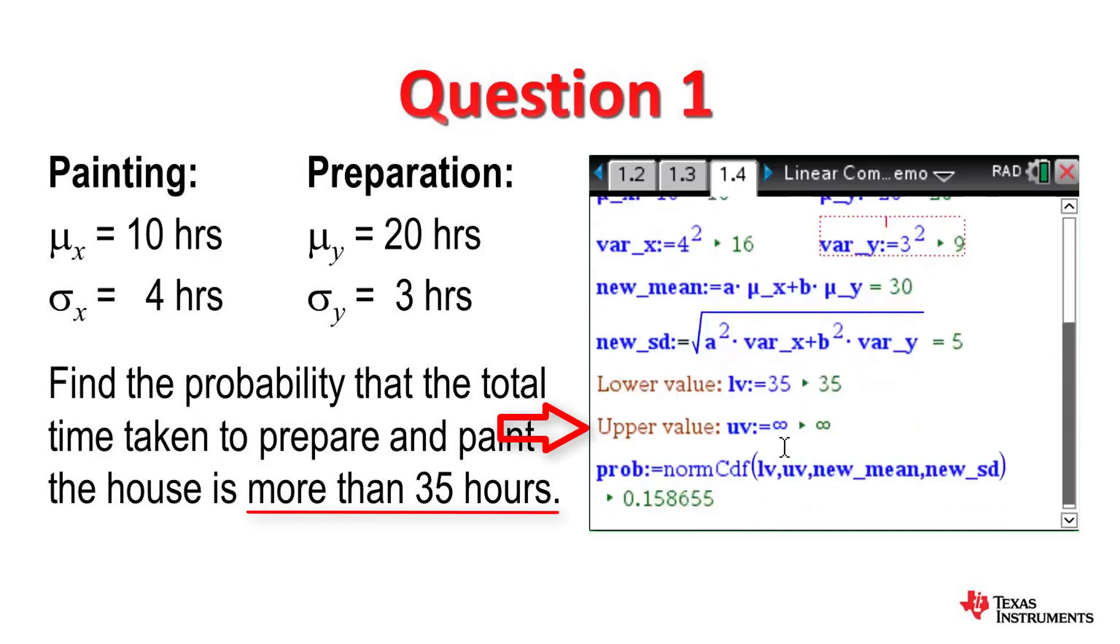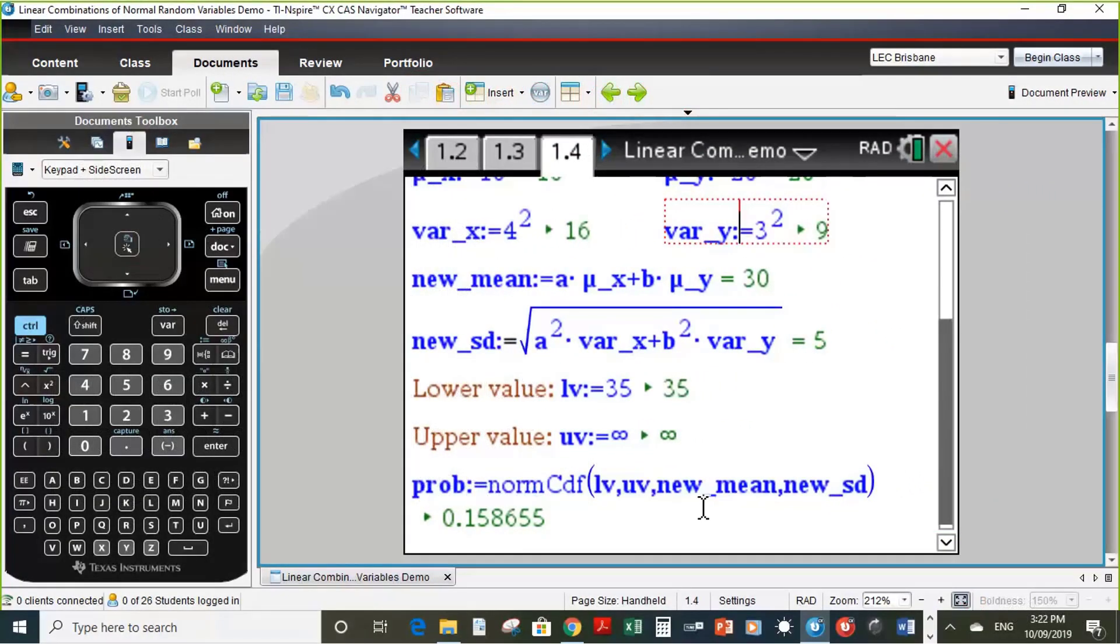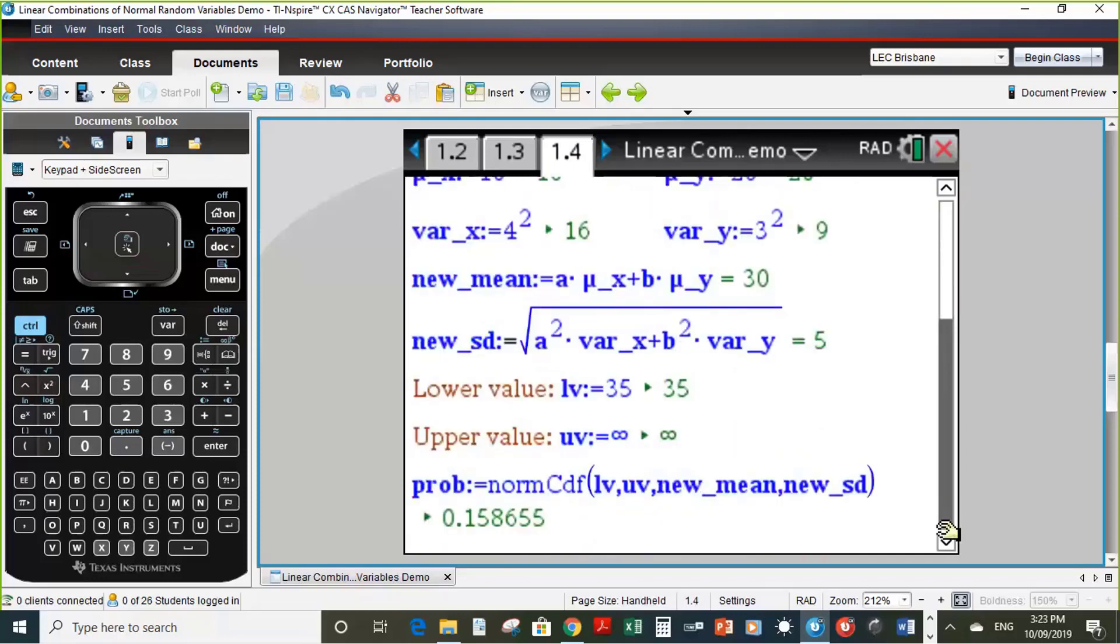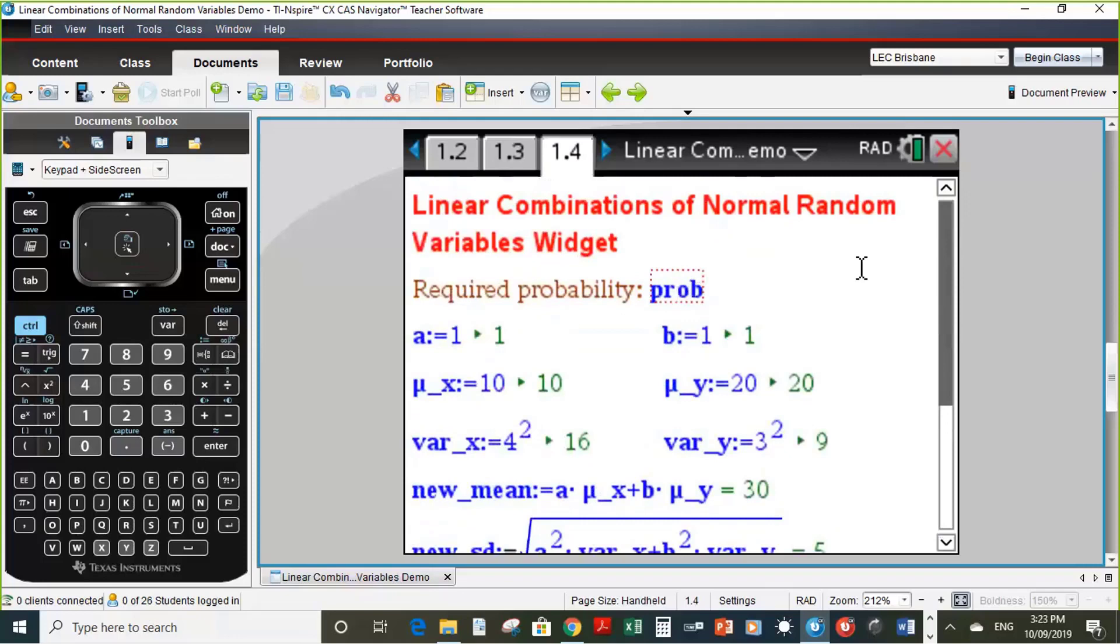In this instance a equals 1 and b equals 1. Our lower value is 35, our upper value is infinity, and so our probability is calculated using the normal CDF command where we've typed in LV which is the lower value, UV which is the upper value, comma the new mean, comma the new standard deviation, and we get an answer correct to four decimal places of 0.1587. Now that's quite a way down the bottom of the widget. I've also got a math box here, and here if I press enter inside that math box it will give us that value 0.1587 correct to four decimal places. So that's how one has been used already.